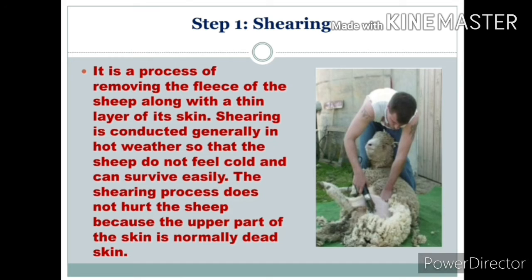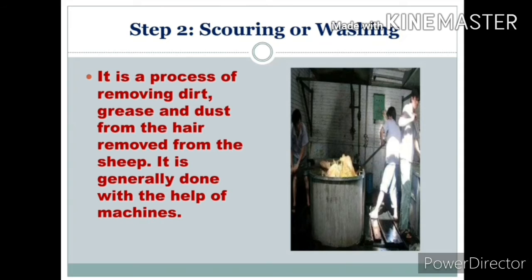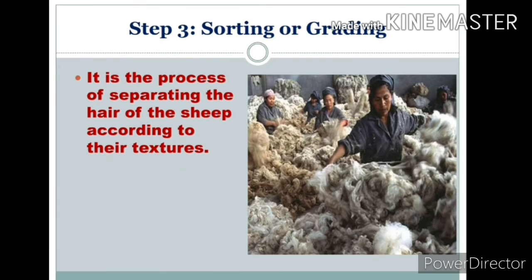The second step is scouring or washing. It is a process of removing dirt, grease, and dust from the hair removed from the sheep. It is generally done with the help of a machine.